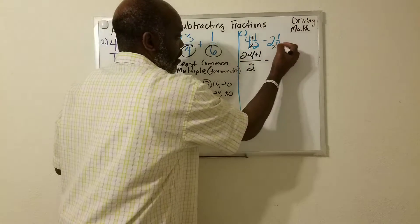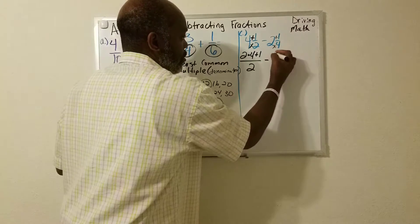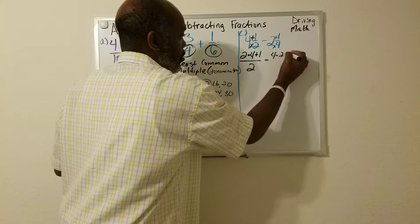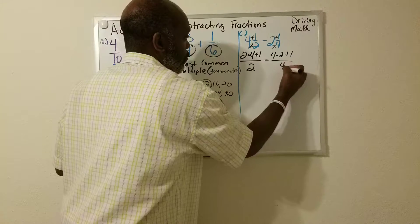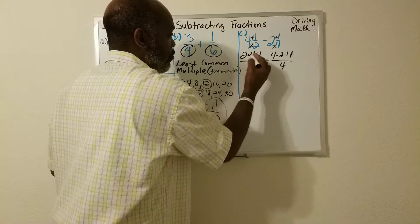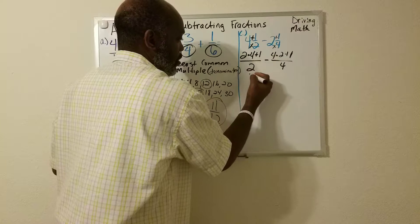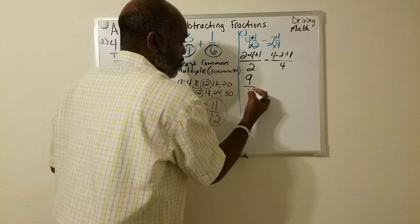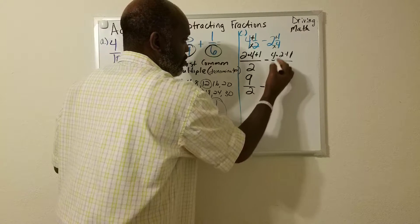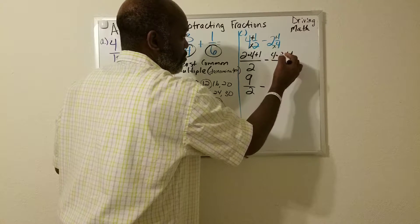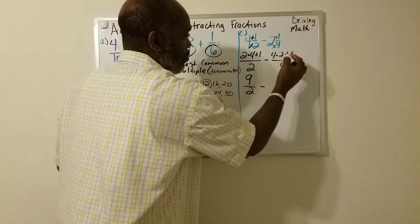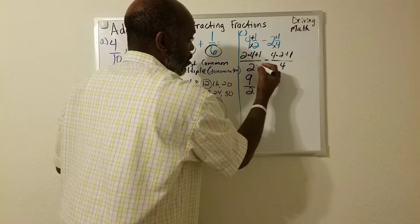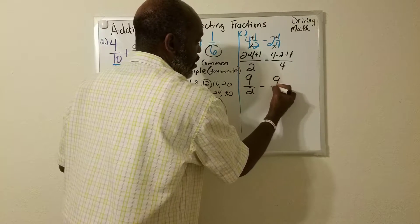I have four times two plus one, four times two plus one over four. So two times four is eight plus one is nine. And then we have nine over two minus four times two plus one. Right. It's the same thing. Nine over four.